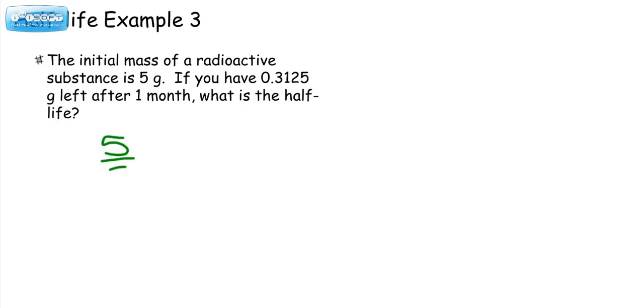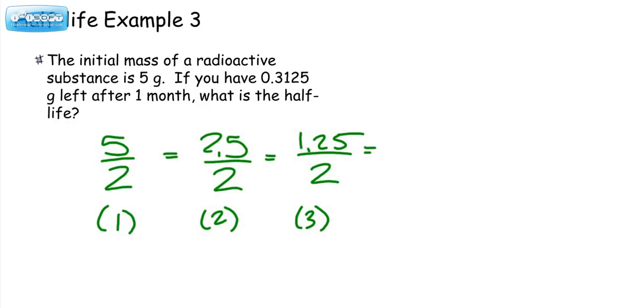So 5 divided by 2. Divide it by 2. Divide by 2. And again, divide by 2. All right, so how many half-lives did that take us now? It took us 4 half-lives to get to that amount.